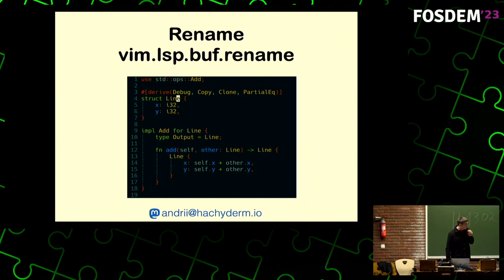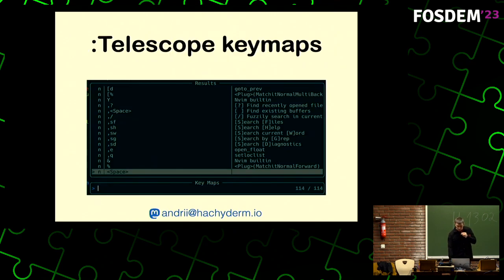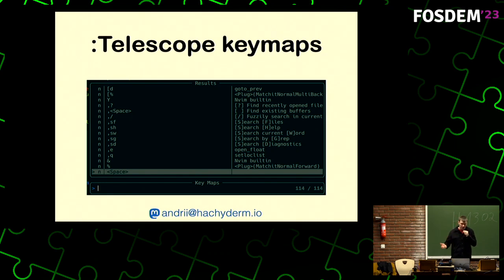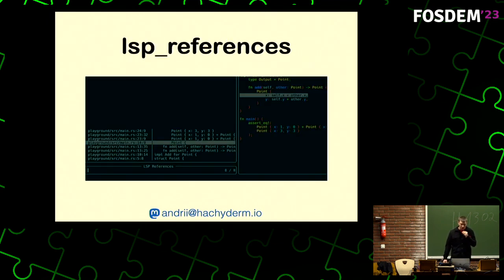If you, like me, forget your keymaps because you have tons of them, you can use this nice plugin — Telescope keymaps — and just remind yourself. It fuzzy-finds your keymaps. For example, if I forget 'lsp references', I can find how to run it and just trigger it.